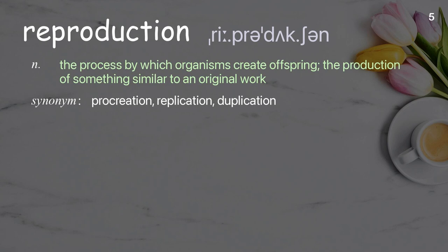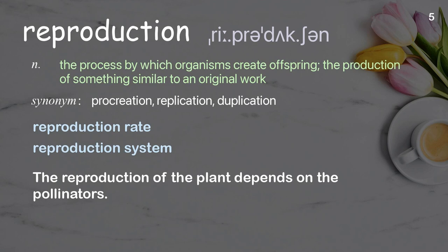Reproduction: The process by which organisms create offspring; the production of something similar to an original work. Examples: reproduction rate, reproduction system. The reproduction of the plant depends on the pollinators.